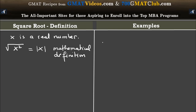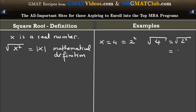For example, if you're given x is equal to 4, we know that 4 is equal to 2 squared. Then the square root of 4, or 2 squared, is equal to only 2. You cannot say it is equal to 2 or negative 2. It's only equal to 2. Again, this is a mathematical convention.